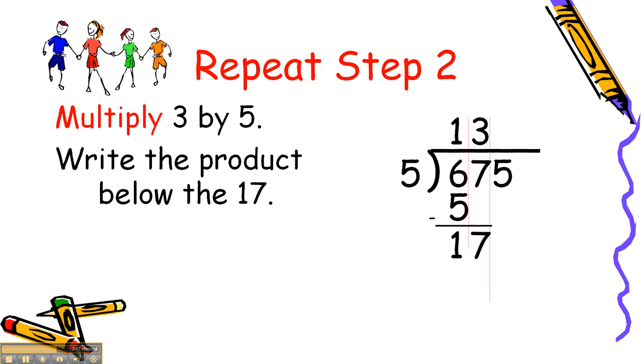Multiply 3 by 5 and write the product below the 17. Well, 3 times 5 is 15, so we write it below the 17.